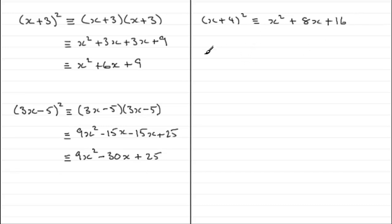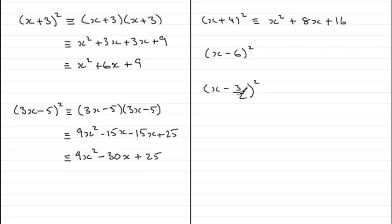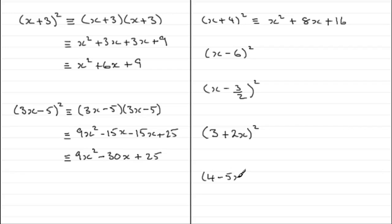You should be able to do some more examples now. Try these: x minus 6 all squared; x minus 3 over 2 all squared — I chose that one because of the awkward fraction; then reversing things, 3 plus 2x all squared; and finally 4 minus 5x all squared.